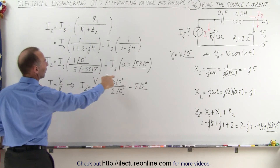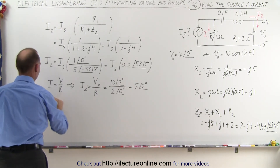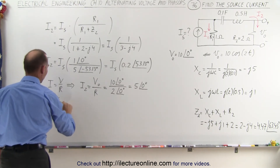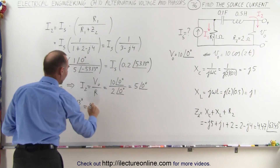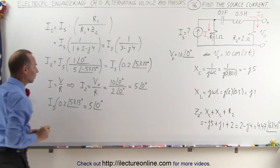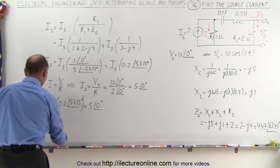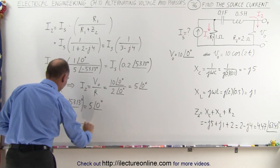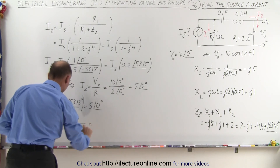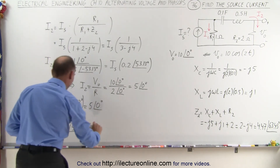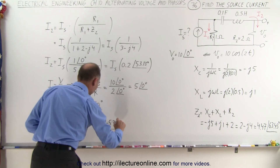Now I2 equals I source. So replacing I2, we say that I source times 0.2 at 53.13 degrees is equal to 5 at 0 degrees. To find the source current, we divide both sides: I sub s equals 5 at 0 degrees divided by 0.2 at 53.13 degrees. That's 25 — since dividing by 0.2 is the same as multiplying by 5 — with a phase angle of minus 53.13 degrees.